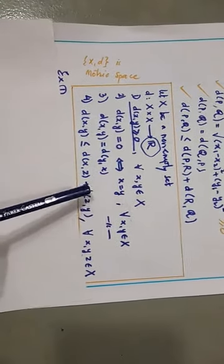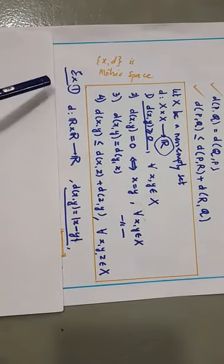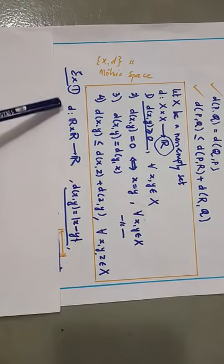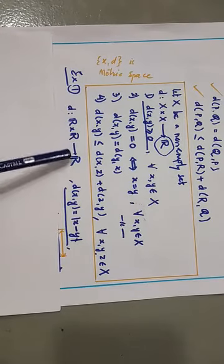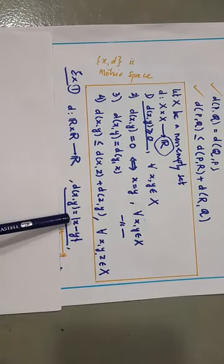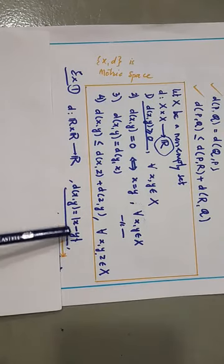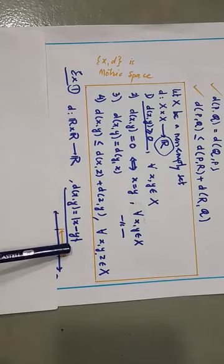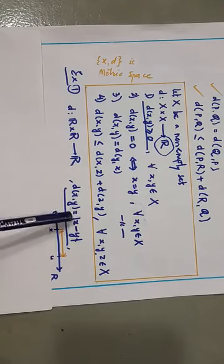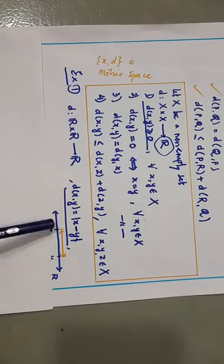Let us see different examples of metric spaces. First example: consider D: ℝ×ℝ → ℝ defined as D(x,y) = |x − y|, where mod denotes the absolute value function. This satisfies all four properties of a metric, and ℝ becomes a metric space with this distance.